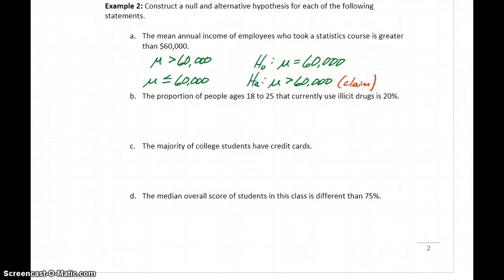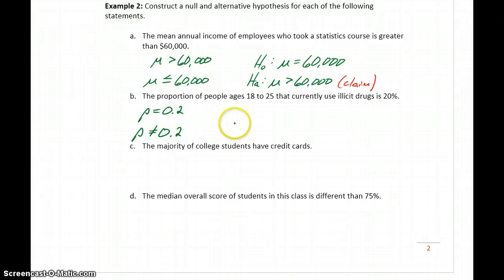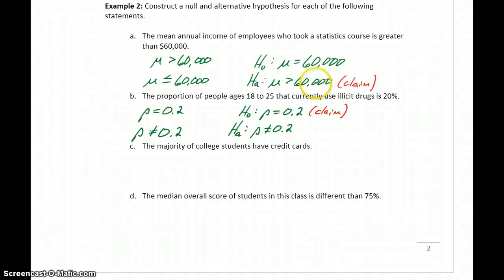That will be common, but not necessarily always the case. In part B, the proportion of people ages 18 to 25 that currently use illicit drugs is 20%. We have a claim about a proportion, so the claim is that P is exactly equal to 0.2. The negation of equal to means the proportion is anything besides 0.2, so P is not equal to 0.2. The statement with no equality becomes the alternative: P ≠ 0.2. The null hypothesis becomes P = 0.2. So in this case, the null hypothesis is the statement that matches the original claim.